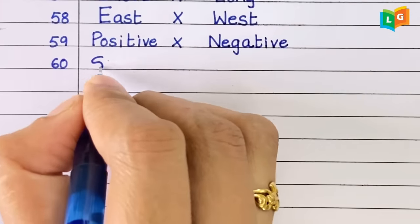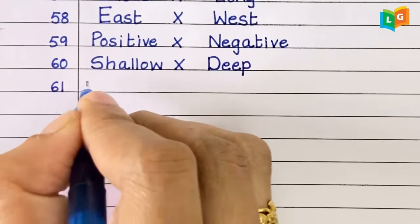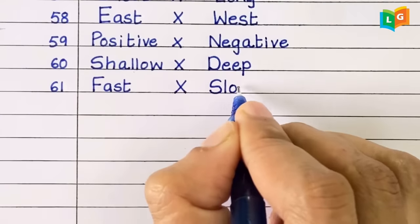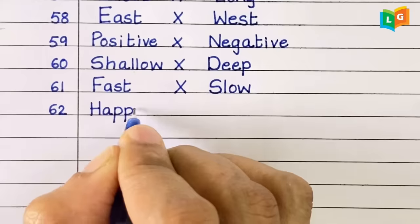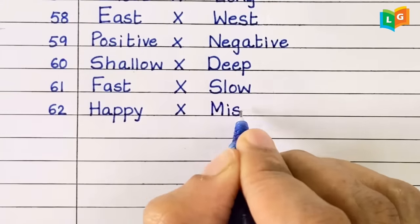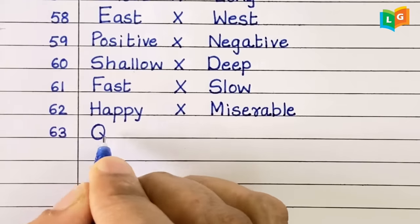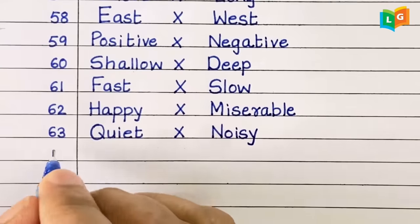Sixty, shallow, deep. Sixty-one, fast, slow. Sixty-two, happy, miserable. Sixty-three, quiet, noisy.